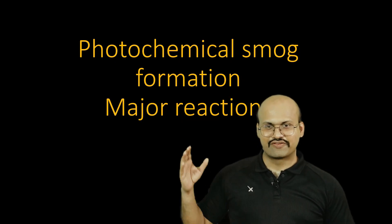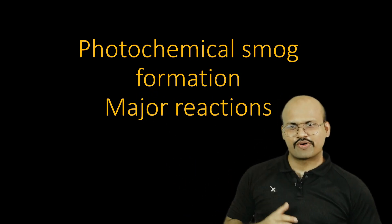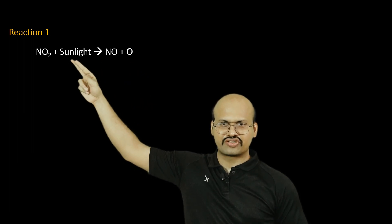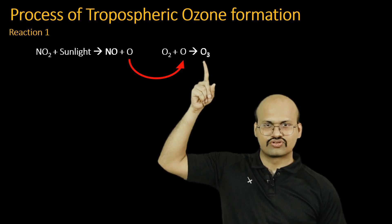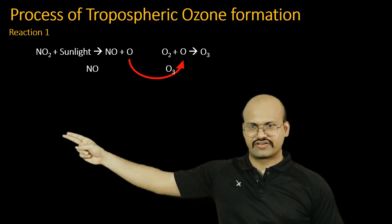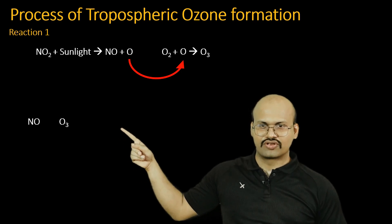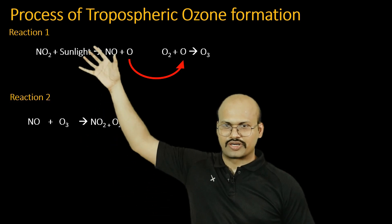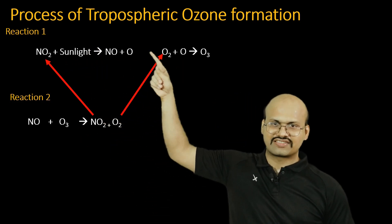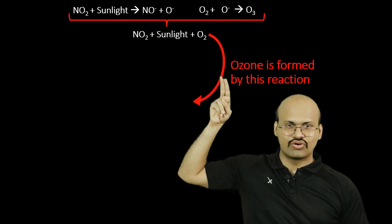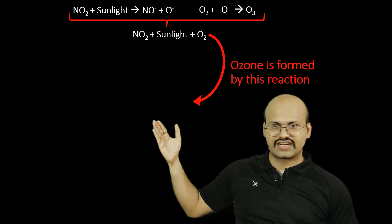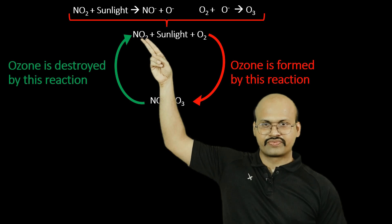Now let's see the major reactions involved in formation of photochemical smog. The most important reaction is the breakdown of NO₂ in the presence of sunlight. NO₂ breaks down into nitrogen oxide (NO) and an oxygen atom. This oxygen atom then reacts with an oxygen molecule (O₂) to give ozone (O₃). This ozone and NO then react with each other to give nitrogen dioxide and an oxygen molecule — returning these molecules back to the atmosphere. So this is basically a cyclic process where these reactions produce ozone, and then the outputs react to destroy ozone.